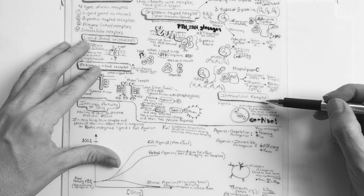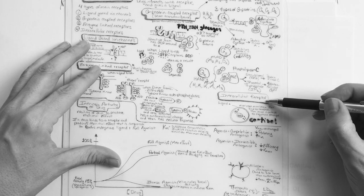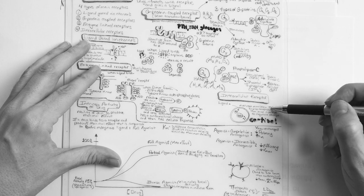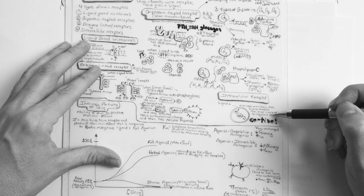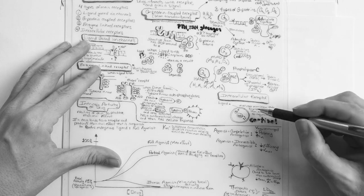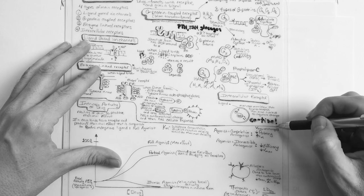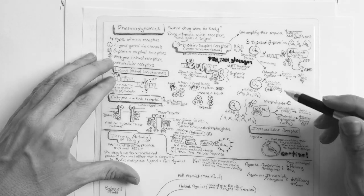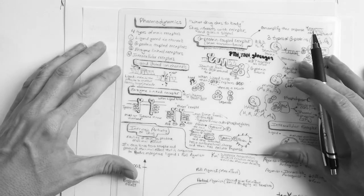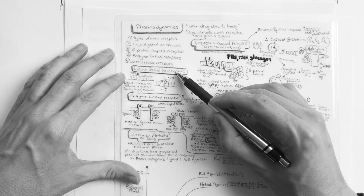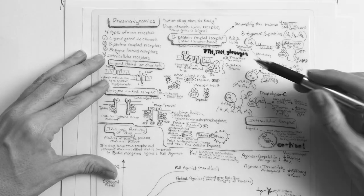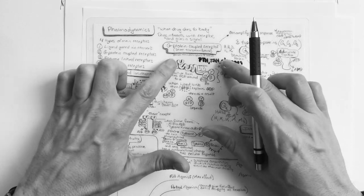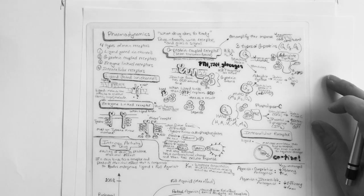The fourth type is intracellular receptors: the ligand crosses the membrane and binds into the nucleus. Cortisol is an example of that. Those are the quick overview of ligand-gated, enzyme-linked, and intracellular receptors, but where we need to spend our time is the G protein.